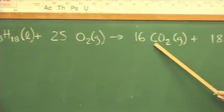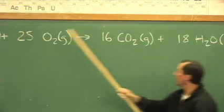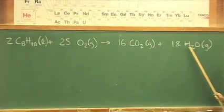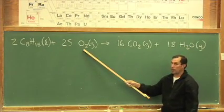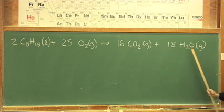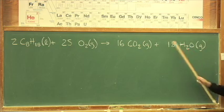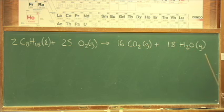We have 36 hydrogens, 2 times 18, 18 times 2, 36 hydrogens. For the oxygens we have 25 pairs of oxygen atoms, 25 times 2 or 50. And on the right side we have 18 and 32, 32 and 18 makes 50 so it's nicely balanced.